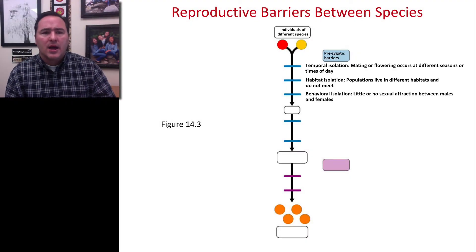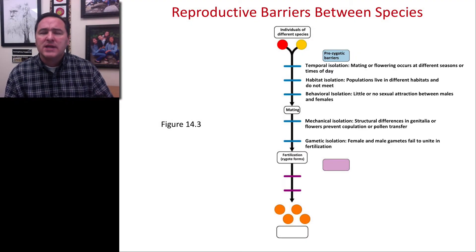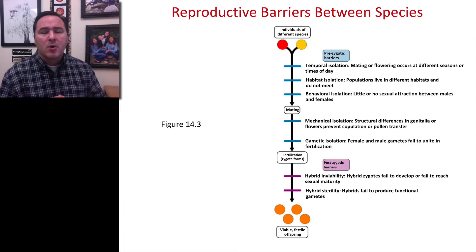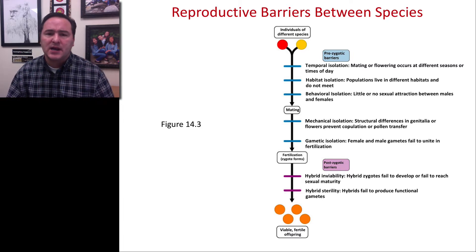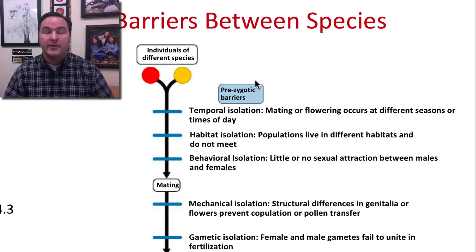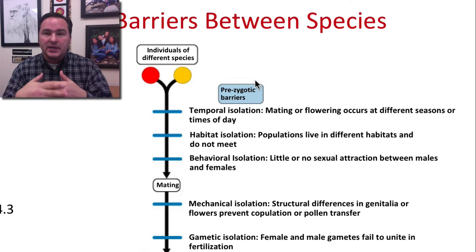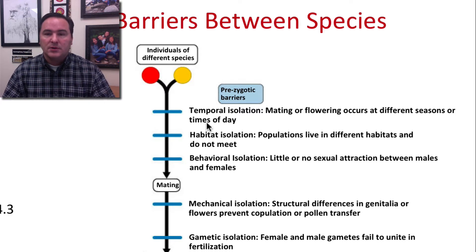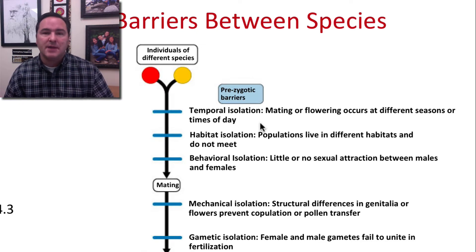I want to talk about reproductive barriers, which relates most to the biological species concept and the phylogenetic species concept. Suppose that we have two individuals of different species. There are multiple prezygotic barriers — barriers before the egg and sperm actually come together — that could cause two species to never reproduce. For example, temporal isolation: mating or flowering occurs at different seasons or times of the day.